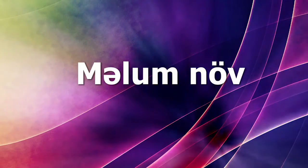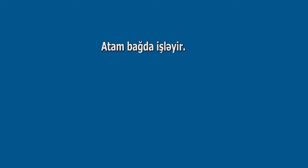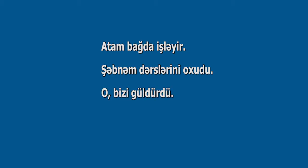Məlum növ: Məlum növ feyillərdə iş görən qramatik cəhətdən məlumdur. Məlum növ feyillər xüsusi şəkilçilərlə yaranmır. Məlum növ feyillər həm təsirli, həm təsirsiz feyillərdən yaranır. Nümunələr: Atam bağda işləyir. Şəbnəm dərslərini oxudu. O, bizi güldürdü.